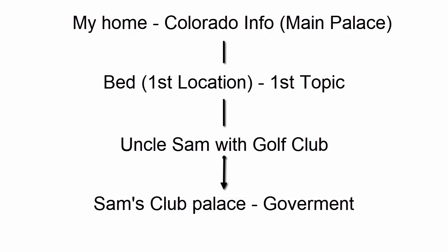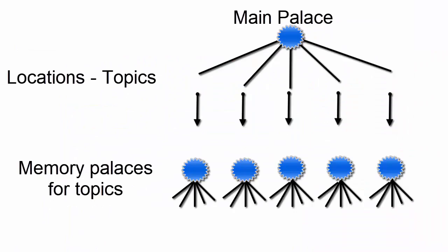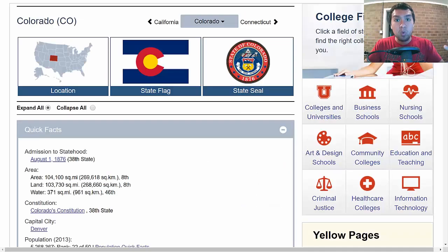So that's how it works — I would do that for every single memory palace and every single topic, placing them into the locations in the main memory palace. Now, why have a main memory palace? Because everything in those other palaces relates to Colorado — geography, government, food, activities — all that stuff is about Colorado. So the main memory palace represents Colorado, and every single location is a different topic about it. This is an example where order doesn't matter in the main memory palace, because government doesn't come before geography. When someone asks you a question, you just jump to that specific memory palace and start recalling.